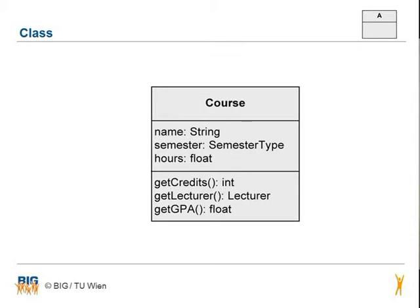Normally the class is a noun and the first letter is written in capital letter. It always consists of the class name in the top section, and in the next section you can specify different attributes. The class course has the attributes name, semester, and hours.